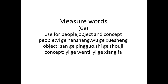We use 个 (gè) for people, or for any other object, or for a concept. For example, one male — 一个男人 (yī gè nánrén) — because 男人 is a person, so we can use 个 (gè) for that. We can use it for one cup of tea — we say the measure word first. One cup of tea uses a measure word.